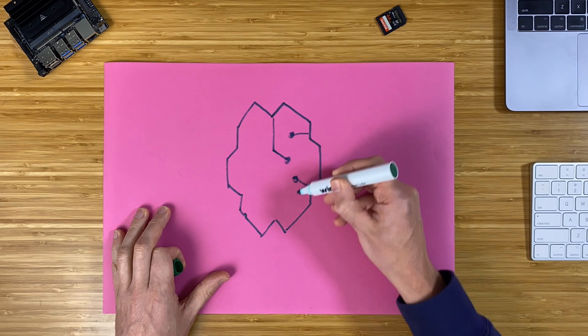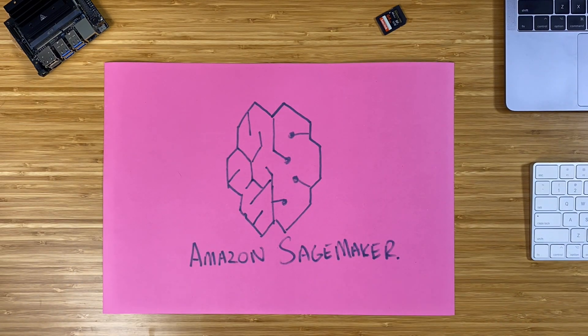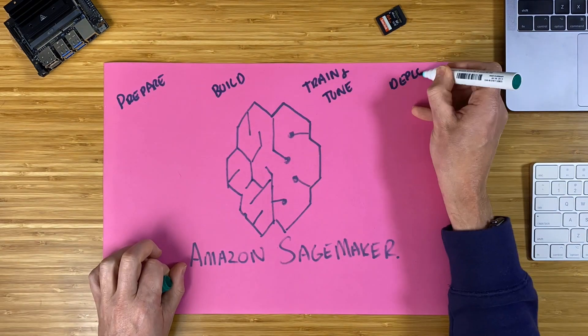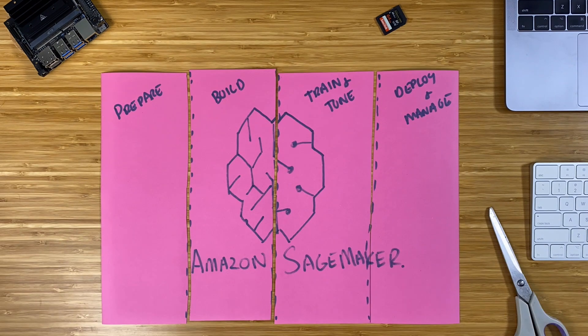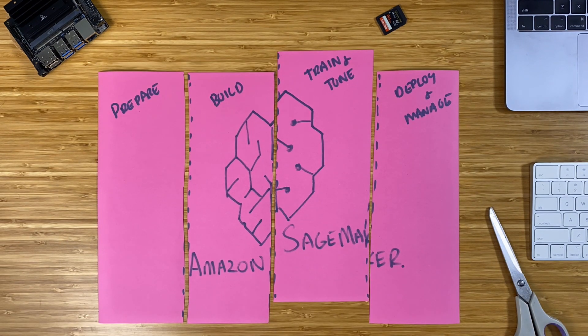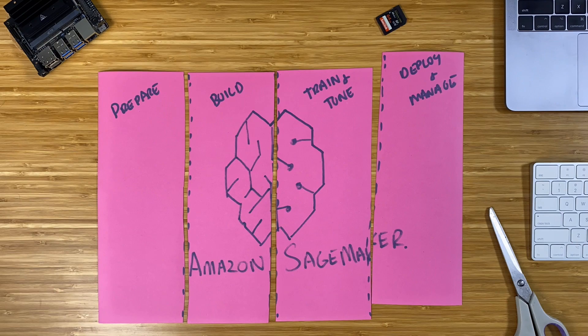I'd like to present a way of looking at it that I think will be helpful, because it's important to have a mental picture of what SageMaker is in order to really get to grips with it. If you look on Amazon's webpage for SageMaker, it will tell you that it essentially helps you with the preparation, building, training, tuning, deployment, and management of machine learning projects — prepare, build, train, tune, manage and deploy. And that's true, of course, but there's so much more to it than just that.